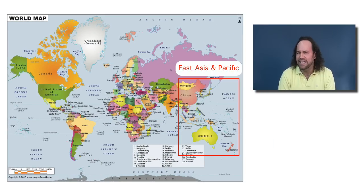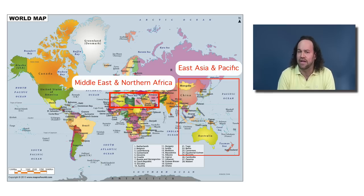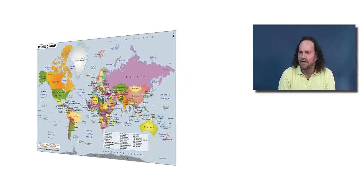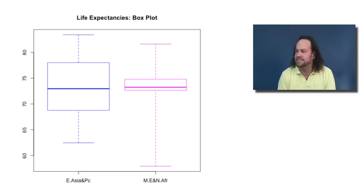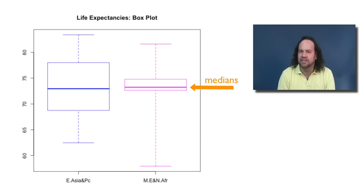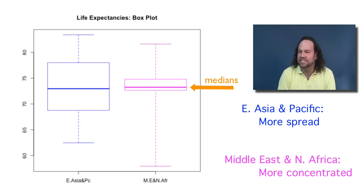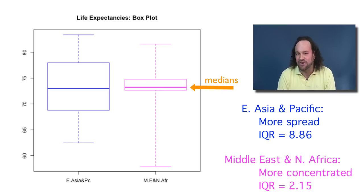Let's also consider comparing East Asia and the Pacific to the Middle East and North Africa. In this case, the medians and means for both regions are all very close to 73 years. So looking at just the center of the data, we'd say these two regions are pretty comparable. But looking at side-by-side box plots, we notice something interesting — the medians are almost exactly the same, but there's a lot more spread in East Asia and the Pacific. The interquartile range is only 2.15 years for the Middle East and North Africa, whereas it's 8.86 years for East Asia and the Pacific.